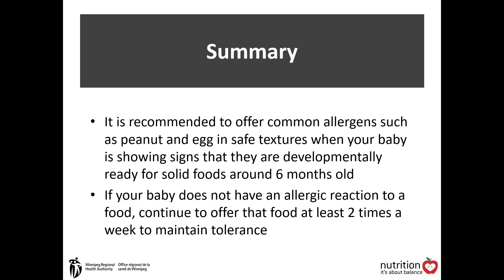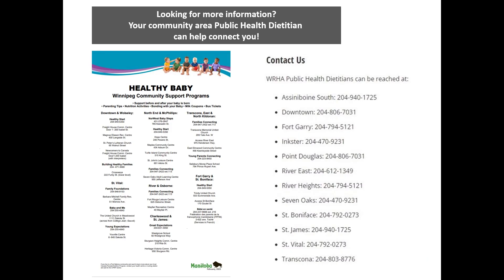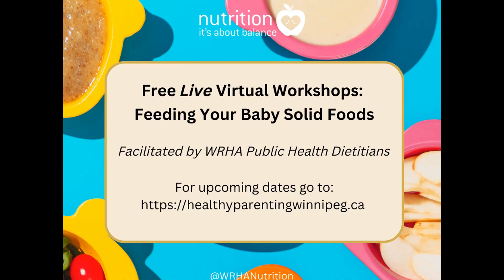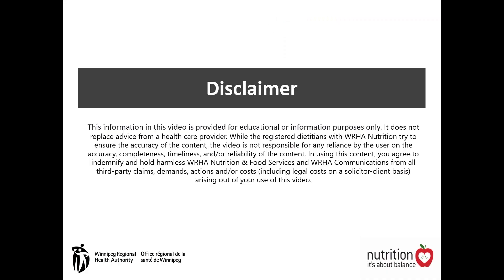In summary, it is recommended to offer common allergens such as peanut and egg in safe textures when your baby is showing signs that they are developmentally ready for solid foods around six months old. If your baby does not have an allergic reaction to a food, continue to offer that food at least two times a week to maintain tolerance. If you have any additional questions, please reach out to your local public health dietitian over the phone, in person at one of the many drop-in groups across the city, or register for a live virtual workshop. Please feel free to check out our other videos for different topics on starting solid foods with your baby. Thank you for listening!